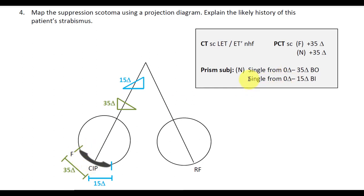We then have a base in result, single from 0 to 15. So with 15 diopters base in, the suppression scotoma extends another 15 diopters nasally. Beyond this point, there's diplopia. You've now mapped the suppression scotoma.